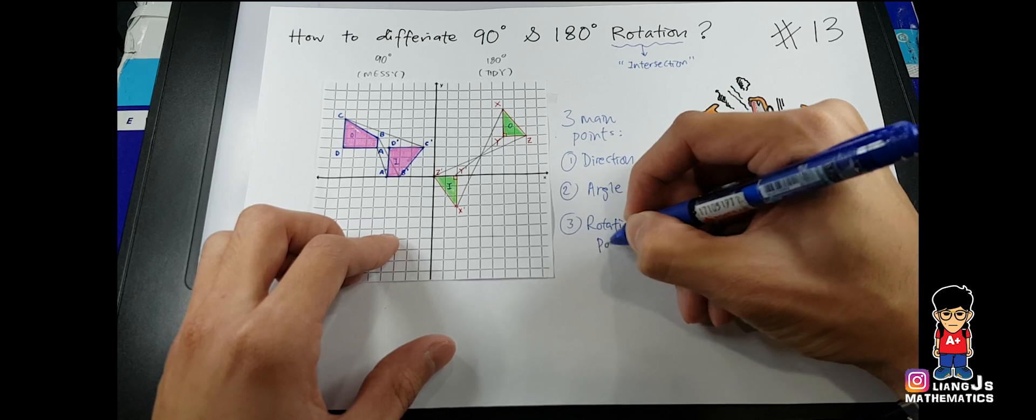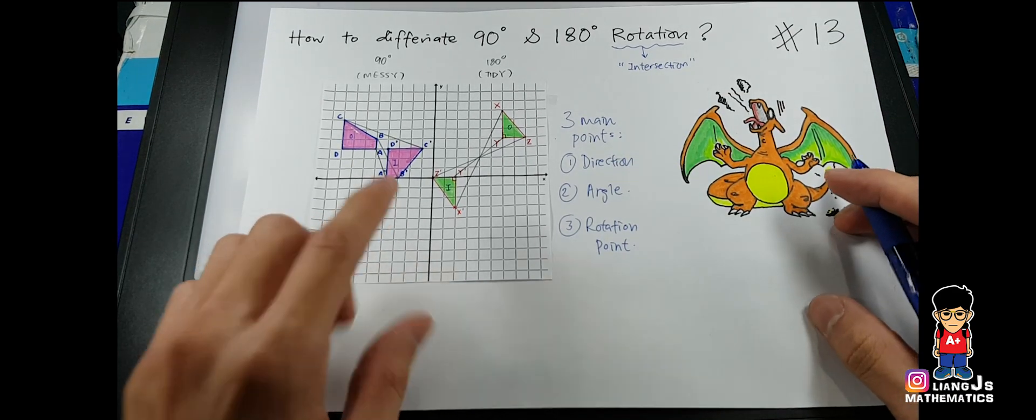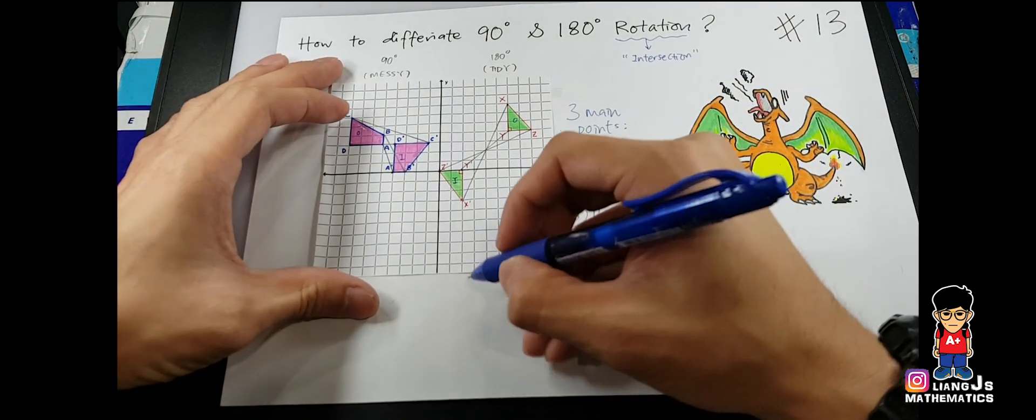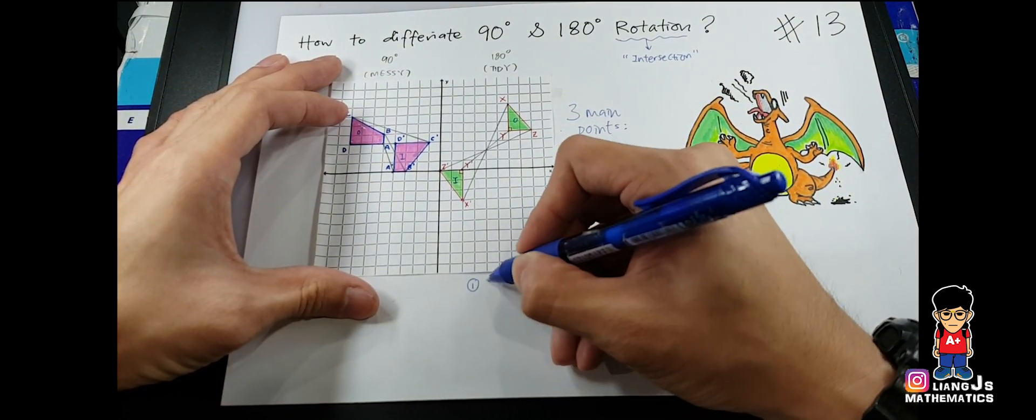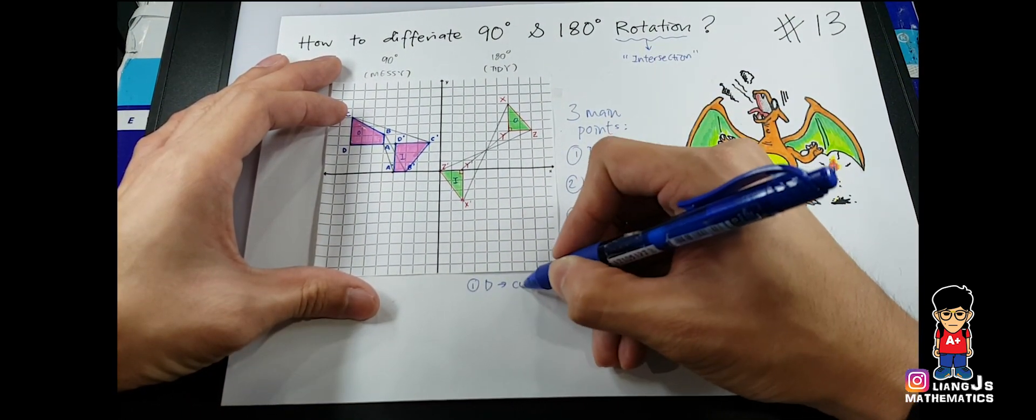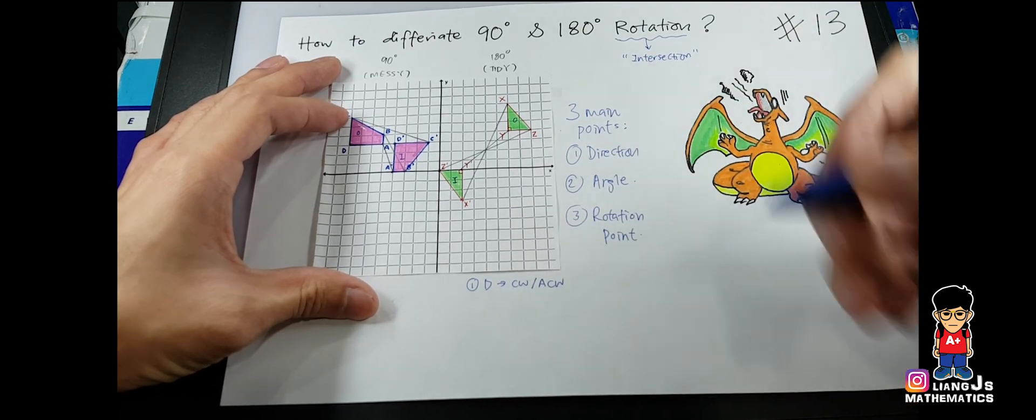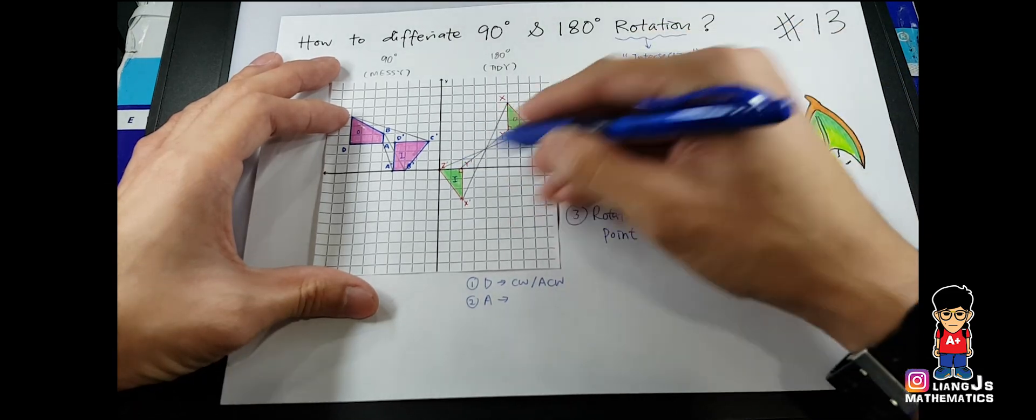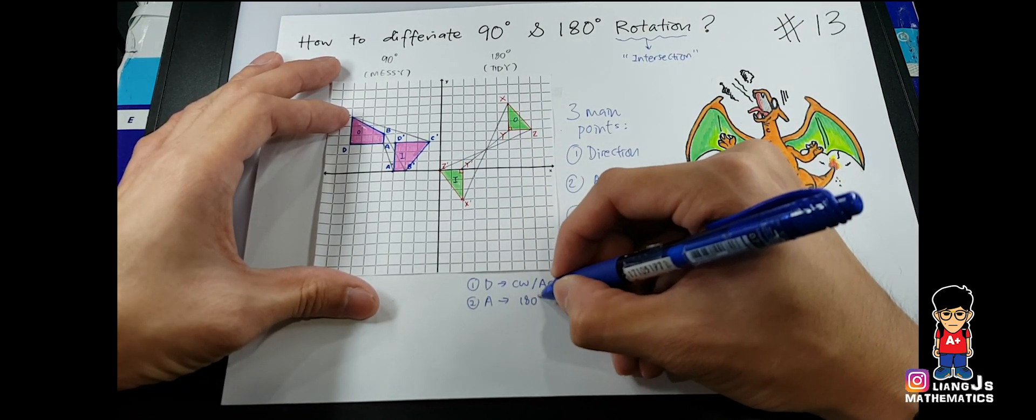So the rotation point here is, do you notice, under this 180 rotation category, you already managed to find your number one direction, which is anything will do, clockwise or anticlockwise will do. And then number two, you have your angle by drawing them, you already know that this is 180 degree.